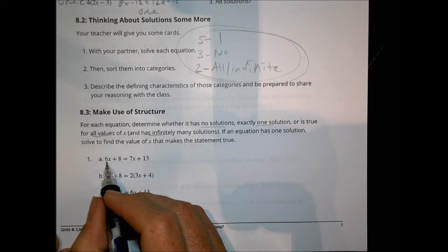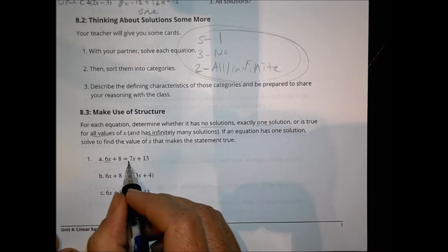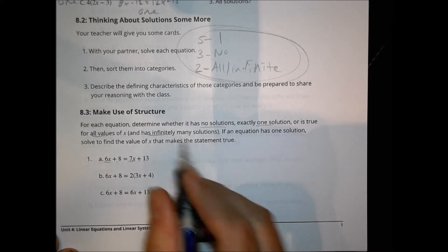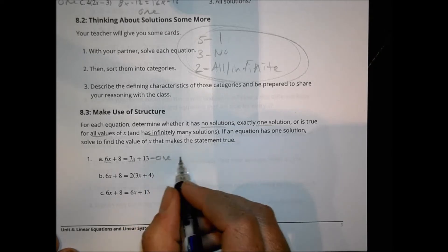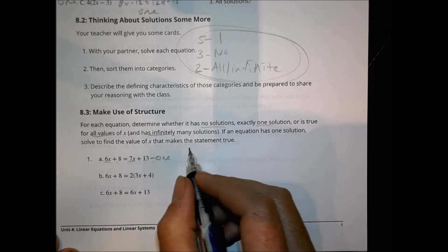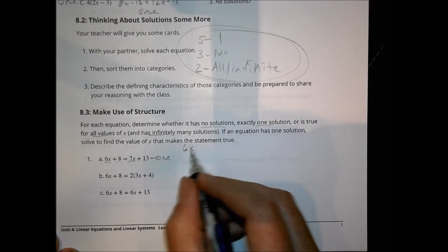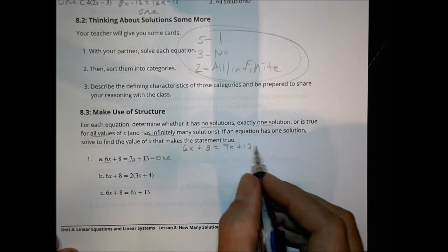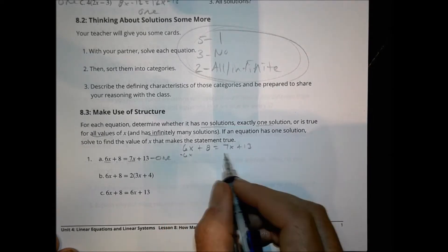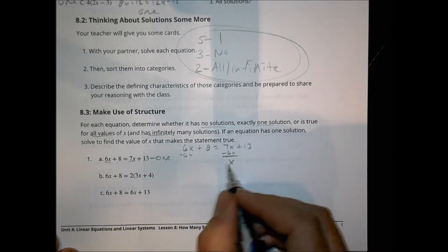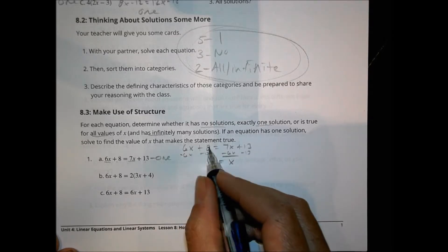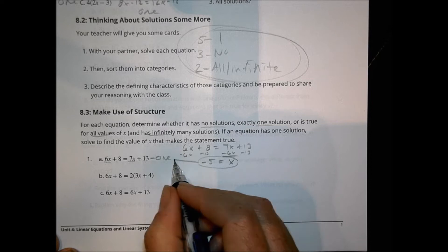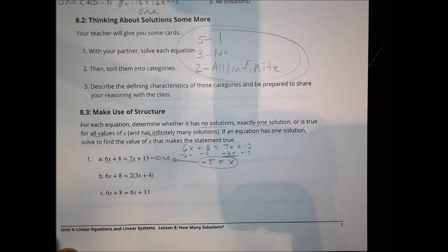For this first equation, we notice there are different x values: 6x and 7x, and different whole numbers. This is set up to be a one solution problem. Writing it out: 6x plus 8 equals 7x plus 13. Subtract 6x from both sides, and x equals negative 13 plus... actually 8 minus 13 is negative 5. So our one solution is x equals negative 5.